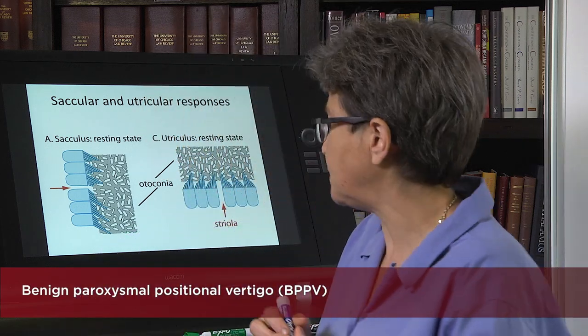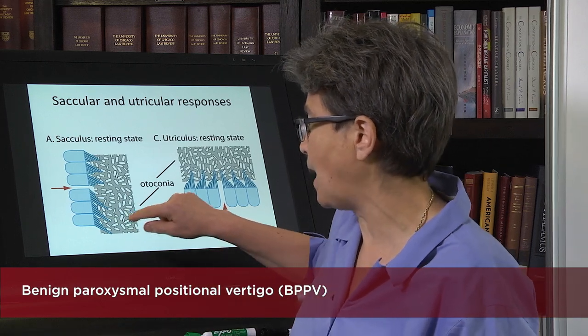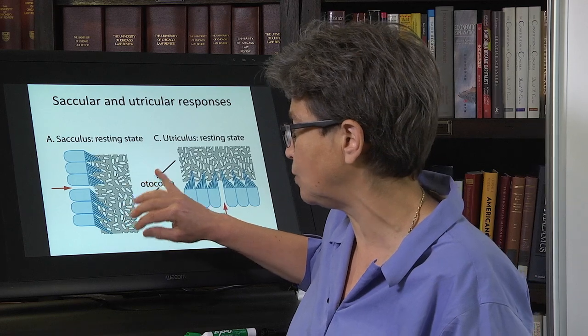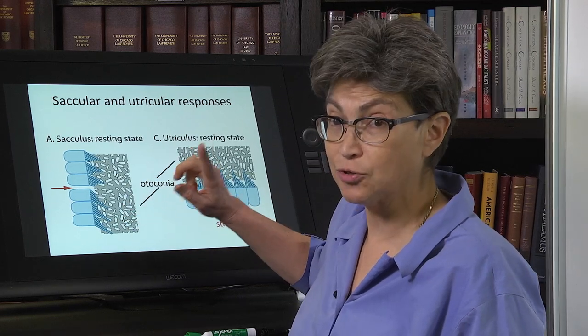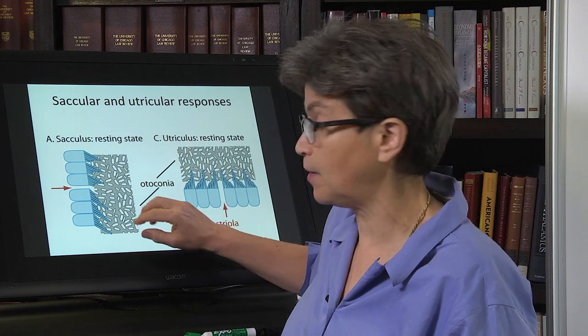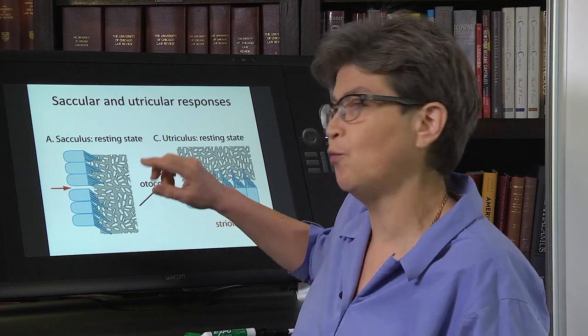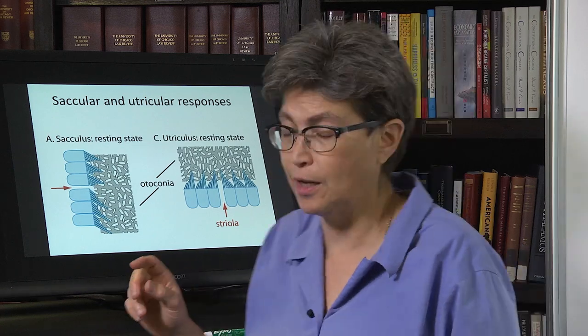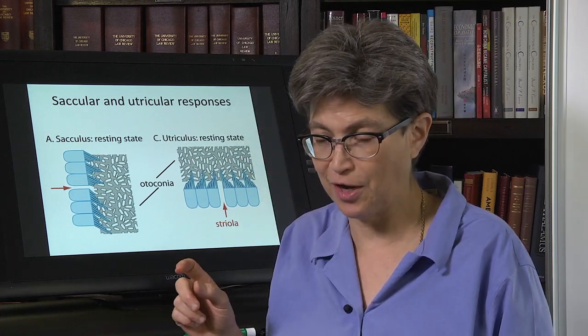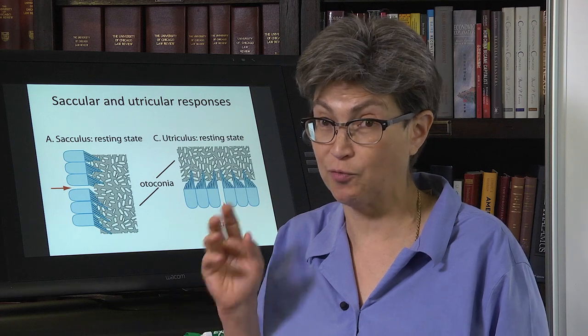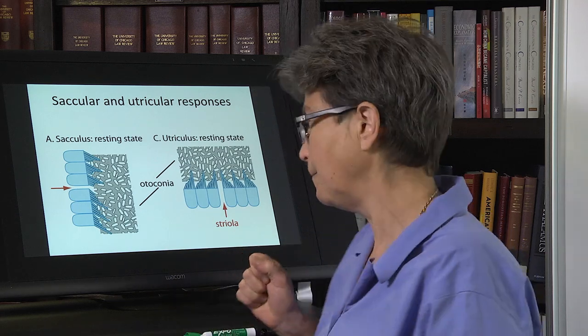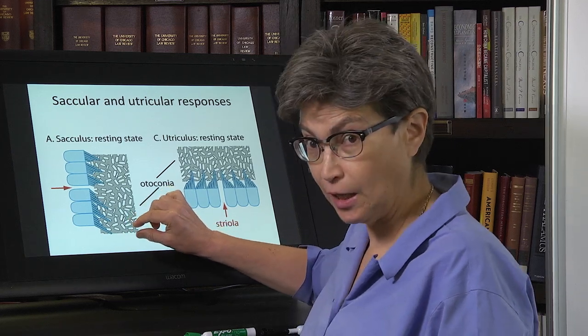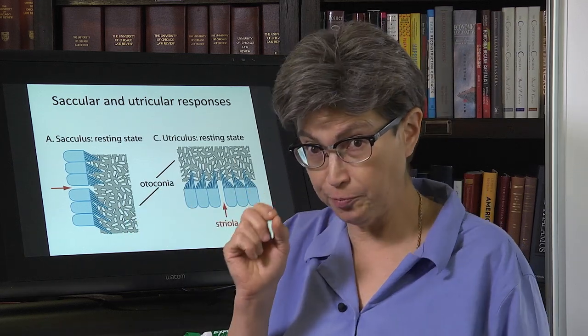And this happens because remember that this otoconial mass is put together, held together by some goo, and it's made during embryogenesis, and then you're stuck with it. And just from wear and tear or from trauma, and actually two people in my lab have gotten this, young people have gotten this from riding roller coasters, a little piece of the otoconial mass can be dislodged.